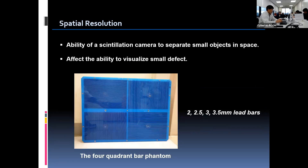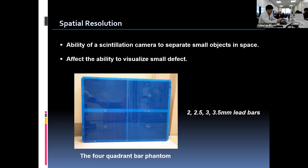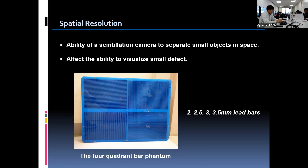The next test is spatial resolution. Spatial resolution is the ability of a scintillation camera to separate small objects in space. Good spatial resolution enables us to see small defects in the clinical patient study. A four-quadrant bar phantom is used for the spatial resolution test with the flood sheet source. Four different widths of lead bars are embedded in each quadrant. The lead bar widths are 2, 2.5, 3, and 3.5 mm respectively.